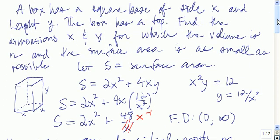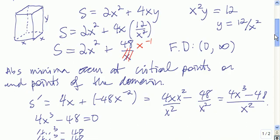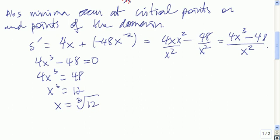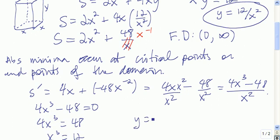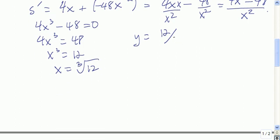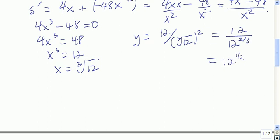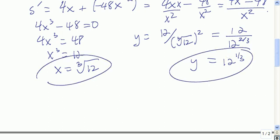Now we need to look again at the problem. We want to find the dimensions x and y for which the volume is 12 and the surface area is as small as possible. We know x is the cube root of 12. To find y, we use y equals 12 divided by x squared, so y equals 12 divided by the cube root of 12 squared, which simplifies as 12 divided by 12 to the 2/3 power, giving 12 to the 1/3. So the absolute minimum is achieved when x equals the cube root of 12 and y equals the cube root of 12.